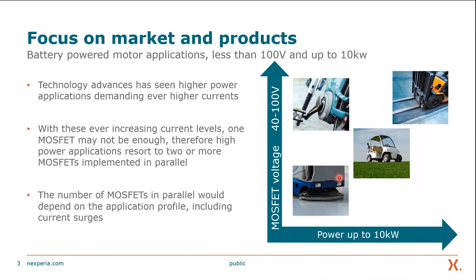First let's talk about the market and the products. Over the years, as technology has been advancing, we've seen an ever increasing requirement for higher currents in power applications. With these ever increasing current levels, one MOSFET might not be enough anymore. That's why high power applications are now resorting to putting two or more MOSFETs in parallel. As we see here on the right, the power can now go all the way up to 10 kilowatts while the MOSFET voltage is between 40 and 100 volts, and from that you can understand how much current is actually required in these systems.